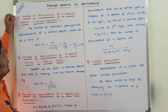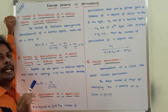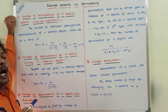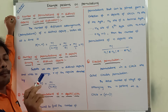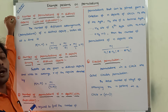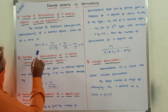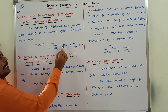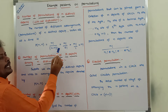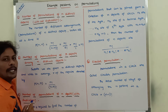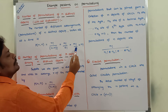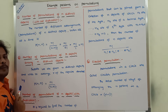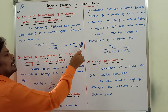First formula: suppose we are given n distinct objects, that means n different objects. How many number of permutations can be formed using n different objects without any duplications? That is equal to P(n, n), which equals n factorial divided by (n minus n) factorial. Since n minus n is 0, and 0 factorial equals 1, we get n factorial divided by 1, which equals n factorial.